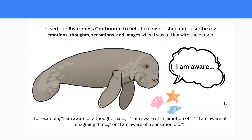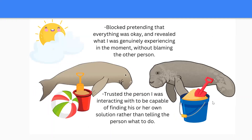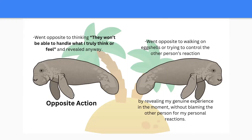Authenticity: Using the awareness continuum to help take ownership and describe your emotions, thoughts, sensations, and images — beginning with the phrase 'I'm aware.' For example: 'I'm aware of a thought,' 'I'm aware of an emotion,' 'I'm aware of imagining that,' 'I'm aware of a sensation of.' Blocked pretending that everything was okay and revealed what you were genuinely experiencing in the moment without blaming the other person. Opposite action: practiced going opposite to thinking that they won't be able to handle what you truly think or feel, and revealed it anyway.